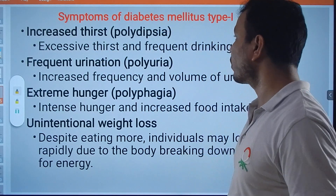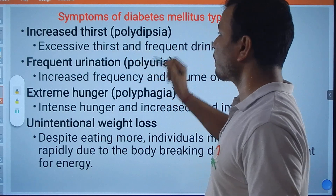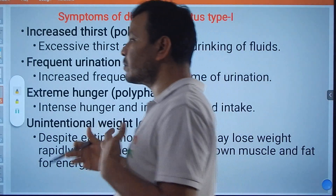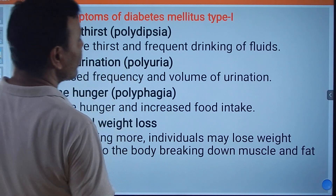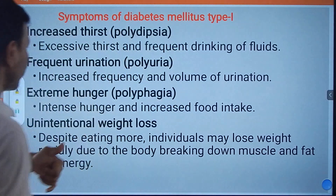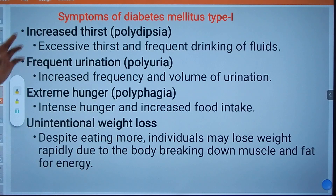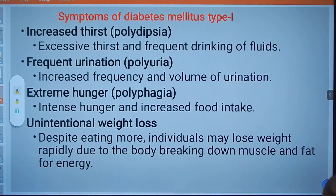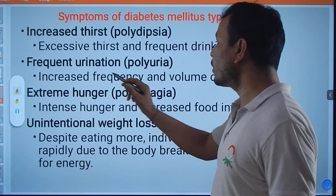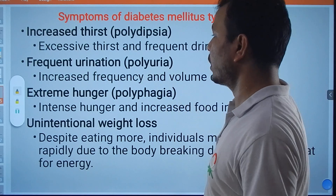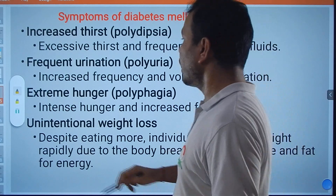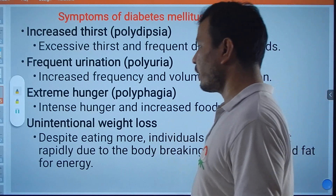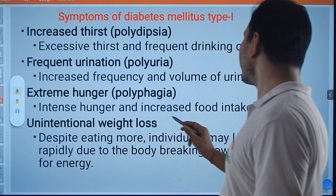What are the various symptoms of Type 1 Diabetes Mellitus? There will be increased thirst, known as polydipsia — excessive thirst and frequent drinking of fluids. There is also frequent urination: if there is more intake of water, there will be more excretion of water, known as polyuria — increased frequency and volume of urination.